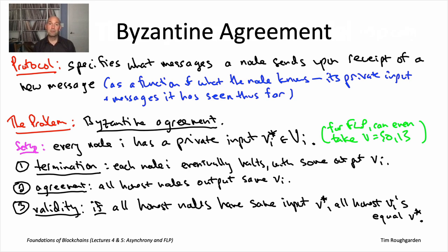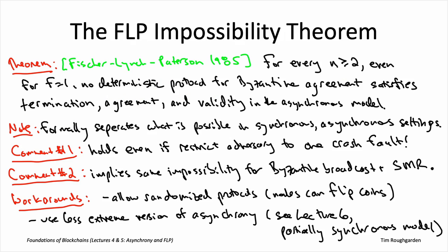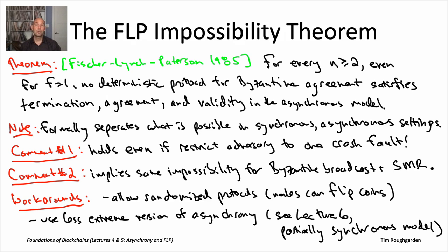While the FLP theorem is stated for Byzantine agreement, it also implies the impossibility of Byzantine broadcast or state machine replication in the asynchronous model. The FLP theorem says Byzantine agreement is impossible in the asynchronous model — even when there is only one Byzantine node. In fact, you don't even need a Byzantine node; all you need is the threat of one crash failure. Even with at most one crash failure, Byzantine agreement is impossible in the asynchronous model via deterministic protocols.